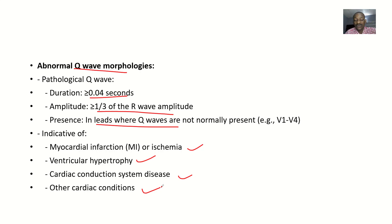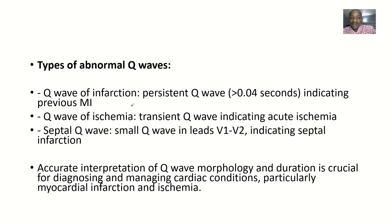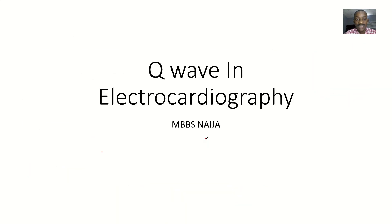Talking about the types of abnormal Q waves: there's Q wave of infarction where there's a persistent Q wave, usually more than 0.04 seconds, indicating that there was a previous myocardial infarction. The Q wave of ischemia is a transient Q wave indicating acute ischemia. Septal Q wave is a small Q wave in leads V1, V2, indicating septal infarction.